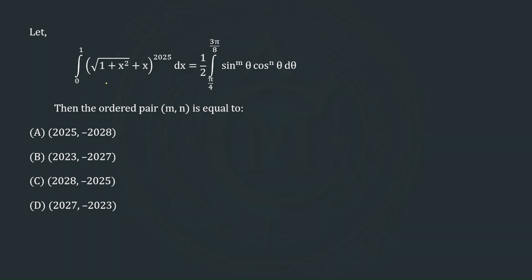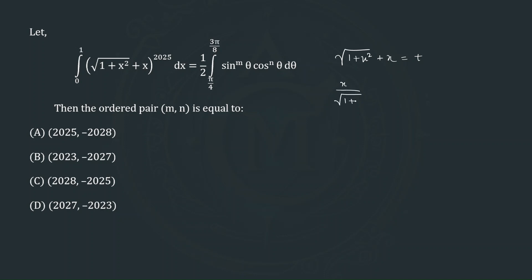We can try to somehow convert the first integral into the second integral by using the substitution technique. We substitute the term inside this bracket equal to some variable t — that is, √(1+x²) + x = t. Then, differentiating both sides, we get: x / √(1+x²) + 1, times dx, equals dt.